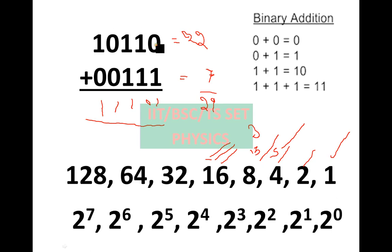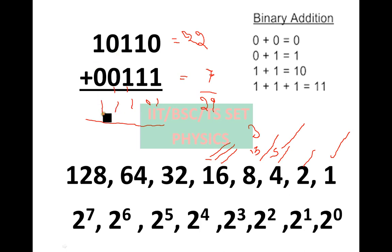Here 0 plus 1 is 1. 1 plus 1 is 0, here is carry 1. So 3 is 1, here is 1, next 1 is 1. 1 plus 0 plus 0 is 1. Next, 1 plus 0 is 1. And you have the same value — make it easy to adjust.